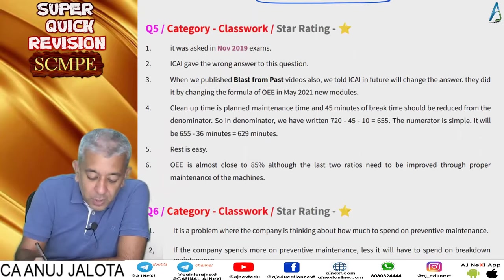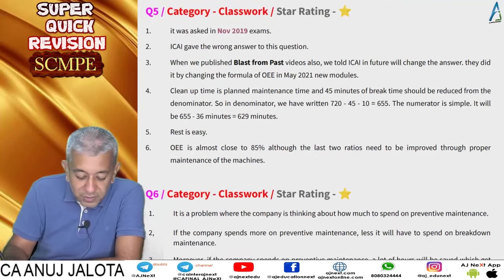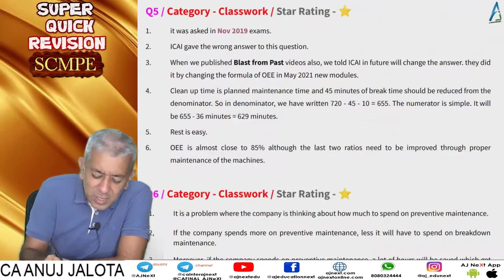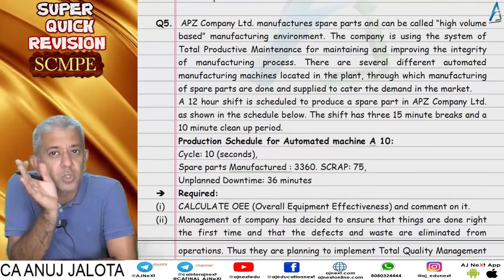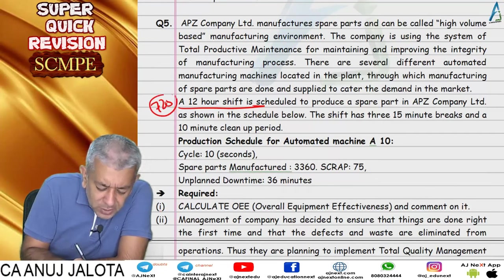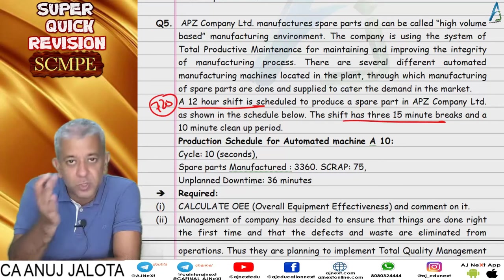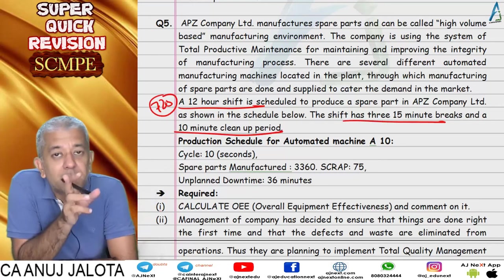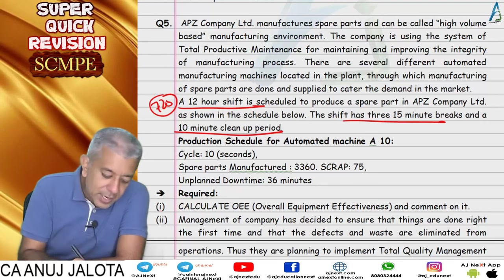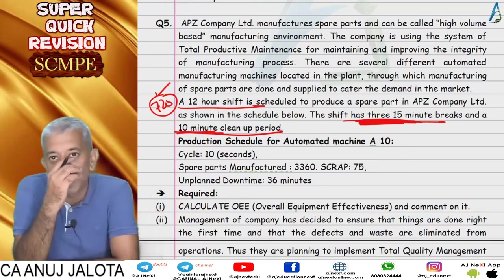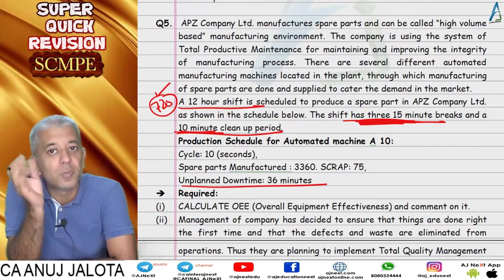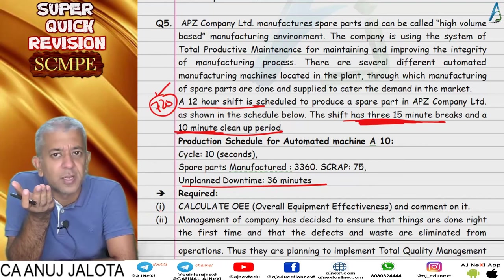Question 5, another one-star easy exam question from November 2019, is similar to Question 3. There is a 12-hour shift equalling 720 minutes. Subtract three breaks of 15 minutes each (45 minutes total) and a 10-minute cleanup period — the cleanup is planned downtime. So the denominator is 720 minus 45 minus 10 = 665 minutes. For the numerator, subtract unplanned downtime from the denominator.